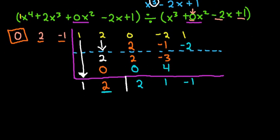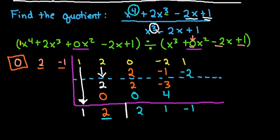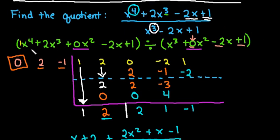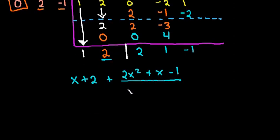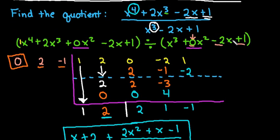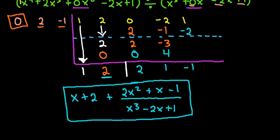So our answer, because of the fact that if you think about x to the 4th divided by x cubed, we would start with a linear term because it's just 1 degree less. So I would have 1x, which is just x, plus 2 is my constant term. And then everything else is going to be a remainder. So we would start with 2x squared plus 1x minus 1 divided by our original value, the x cubed minus 2x plus 1. So this would be our final answer. If I take this and multiply it by the bottom part, we would get the top part.